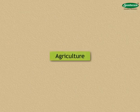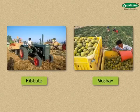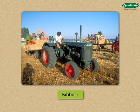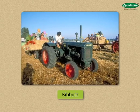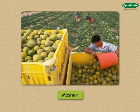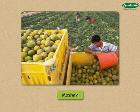A characteristic method of agriculture is seen in Israel. The two types of agricultural settlement here are kibbutz and moshav. In a kibbutz, groups of people come together and practice farming on government land, and the government meets their needs. In a moshav, small landholders come together and practice farming on a cooperative basis.